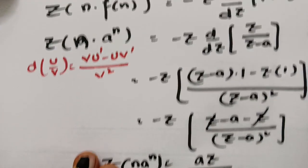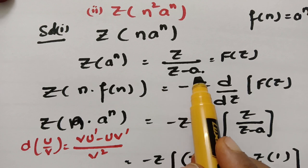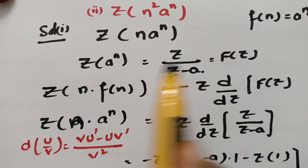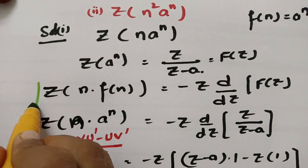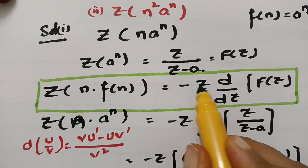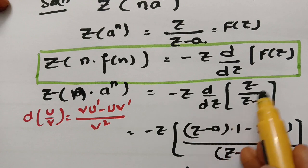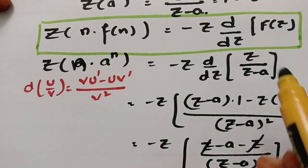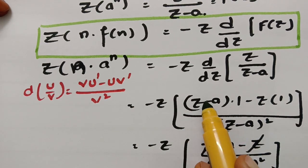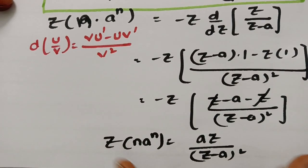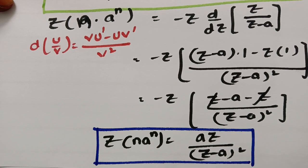To summarize: if aⁿ is multiplied by n, according to special functions Z{aⁿ} = Z/(Z−a). We treat this as capital F(z) and f(n) = aⁿ. Using the formula Z{n·f(n)} = minus z times d/dz of F(z), we get Z{n·aⁿ} = minus z times d/dz of [Z/(Z−a)]. After applying the u/v rule, the final answer is aZ/(Z−a)².